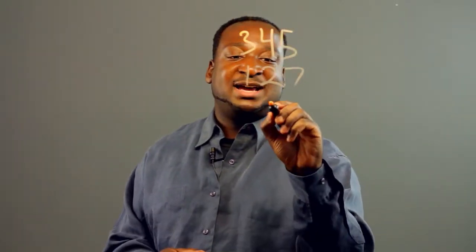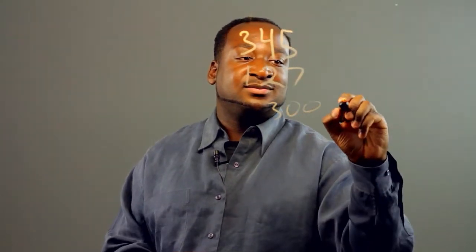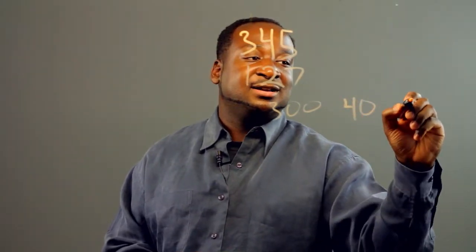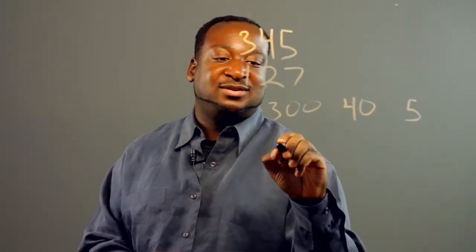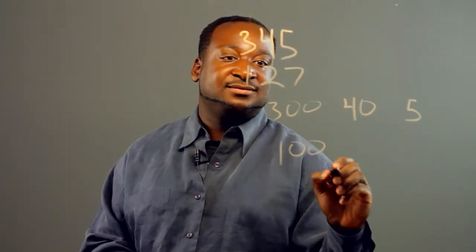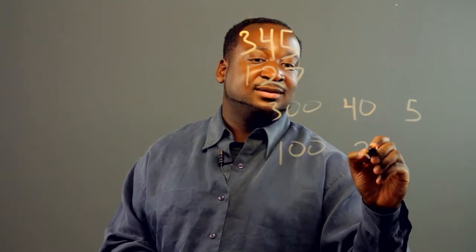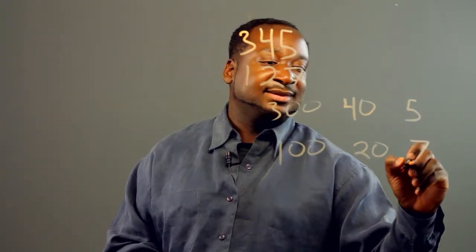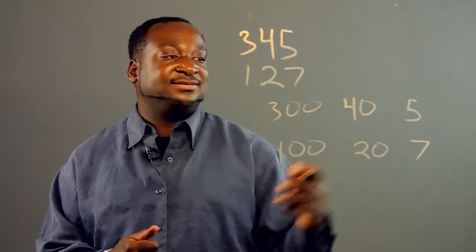When decomposing this, we have 300 plus 40 plus 5, subtracted from 100 plus 20 and 7.